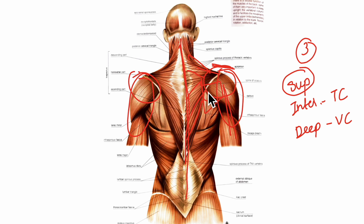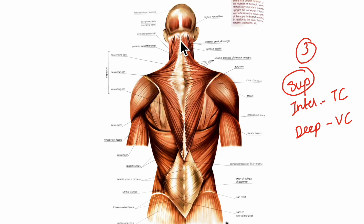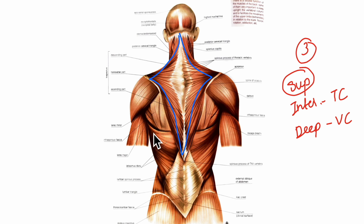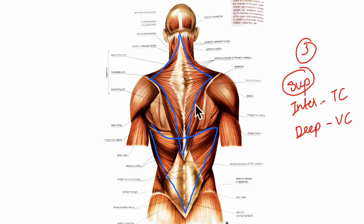Now let's understand which are the superficial group of back muscles. We have mainly the trapezius, the latissimus dorsi, the levator scapulae and the rhomboids.